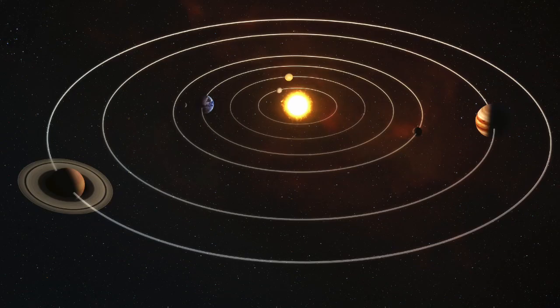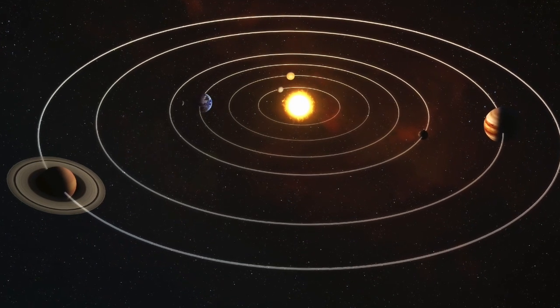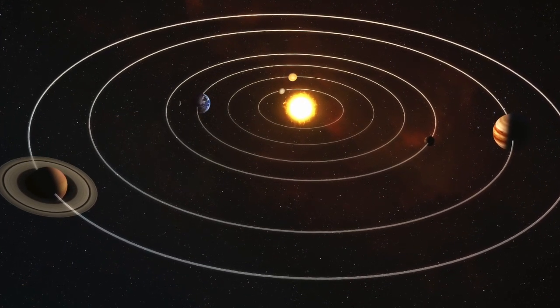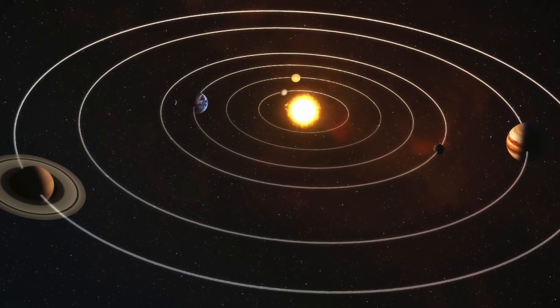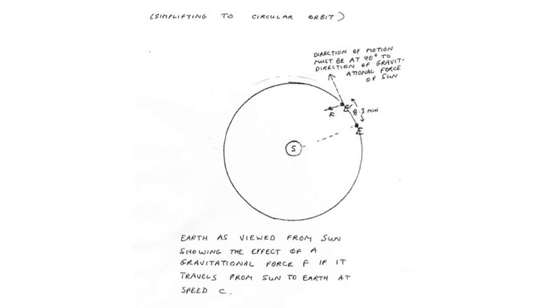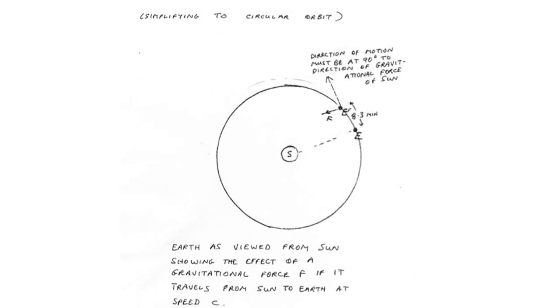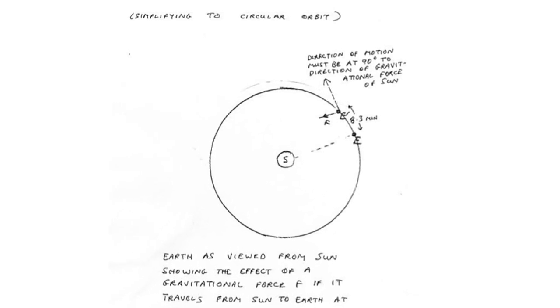Contradiction number one. Let us regard the planetary orbits of the solar system as circular, which we may do without prejudice to the argument. A centripetal force upon the orbiting Earth must be orthogonal to the motion of the planet.